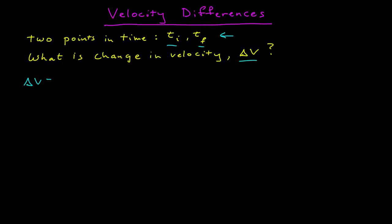Well, delta v is going to be equal to the final velocity minus the initial velocity along the x-axis. So what is this? This is the velocity function evaluated at the final time minus the velocity function evaluated at the initial time.